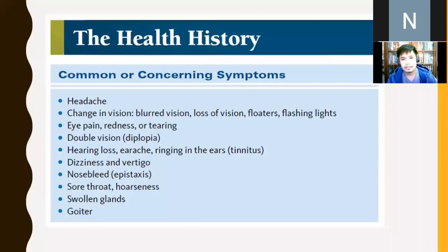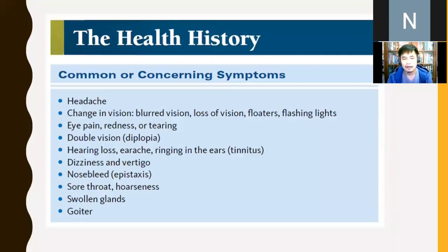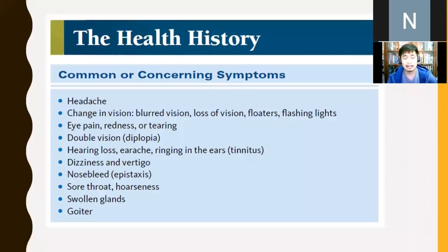These are the common concerning symptoms that patients complain about when they consult for HENT: headache, changes in vision, loss of vision, flashing of lights, eye pain or tearing, redness. Double vision is termed diplopia. Hearing loss, earache, ringing in the ears is called tinnitus. Dizziness and vertigo are related to cranial nerve number 8, the vestibulococlear nerve. Nosebleeding is termed epistaxis, sore throat, hoarseness of voice, swollen glands, and inflammation or swelling of the thyroid gland — goiter.